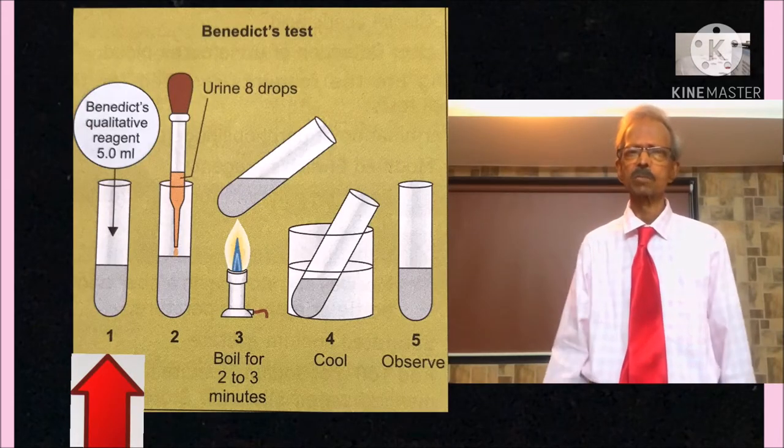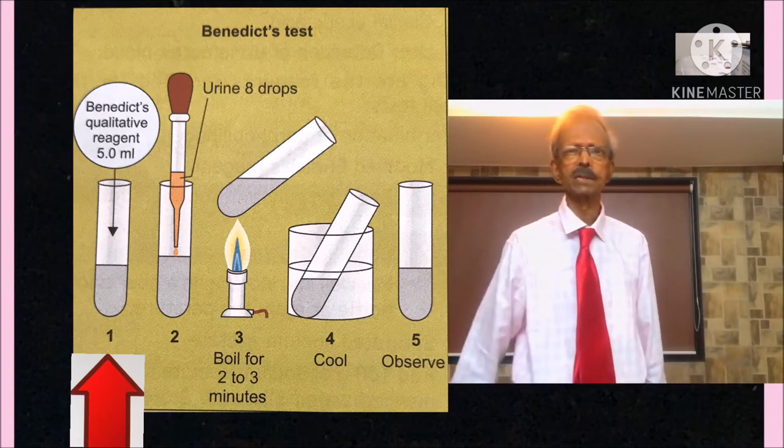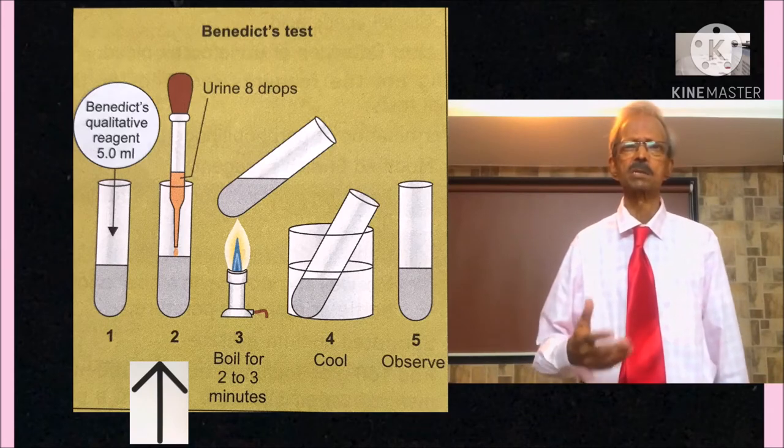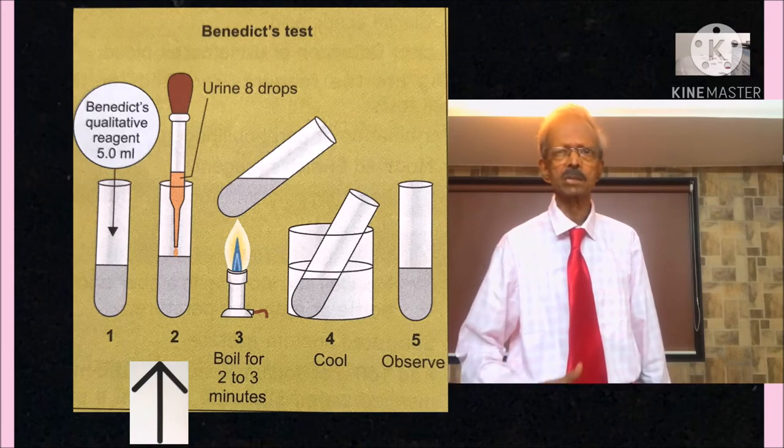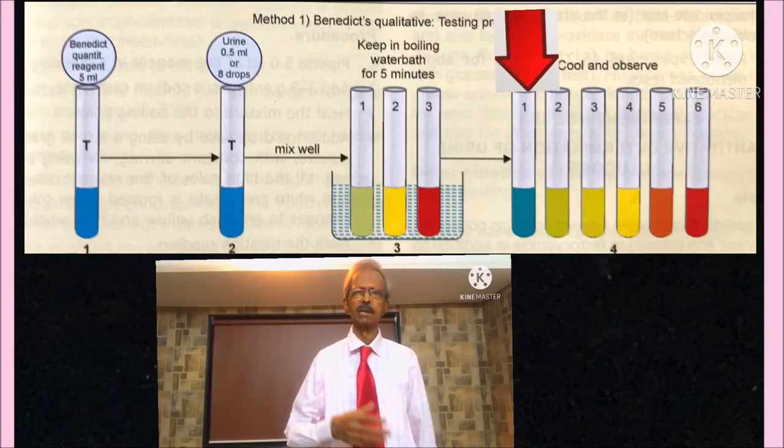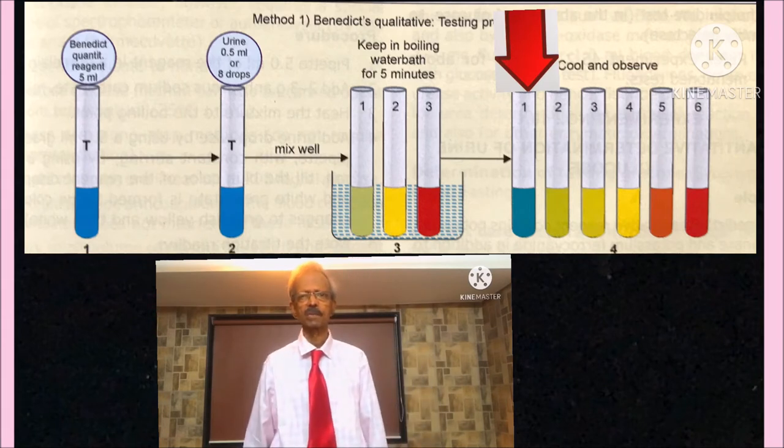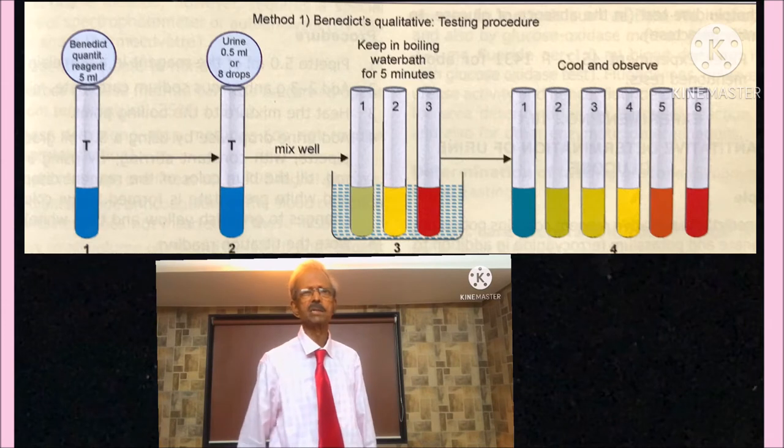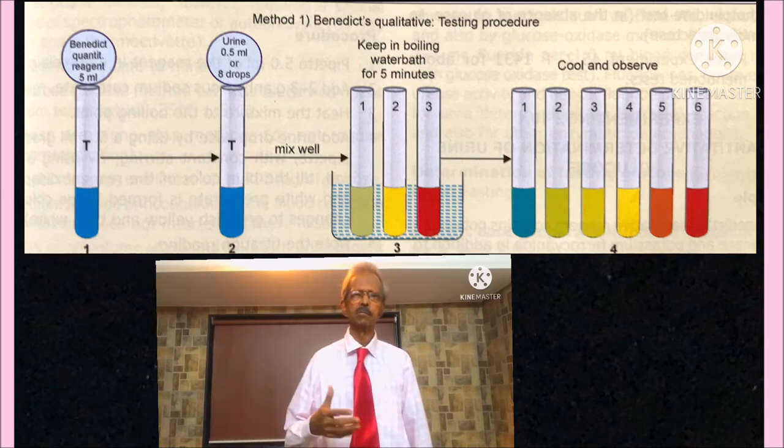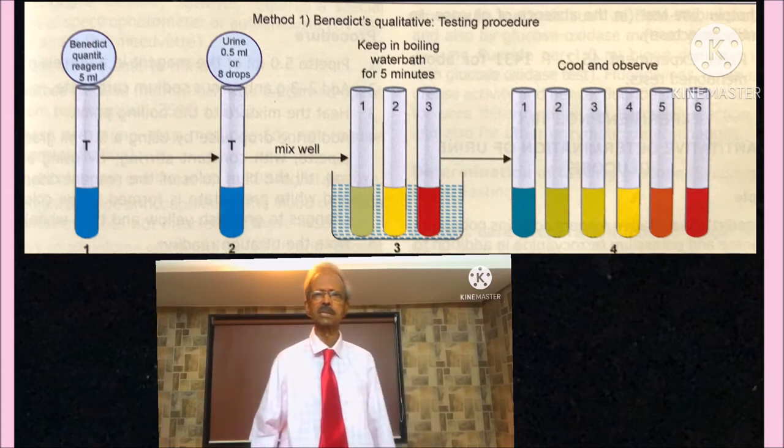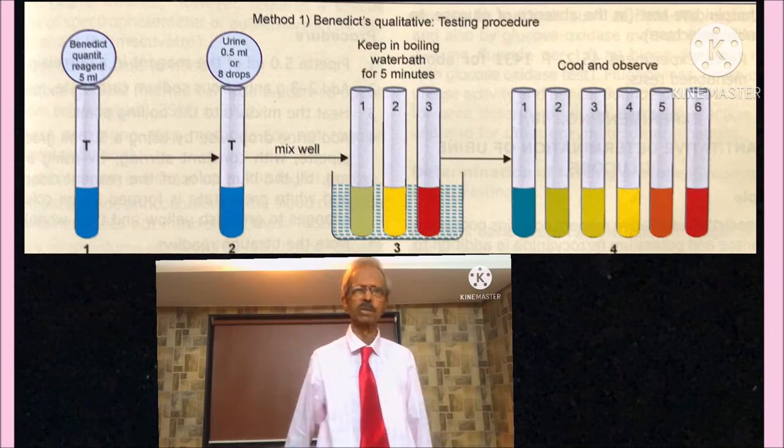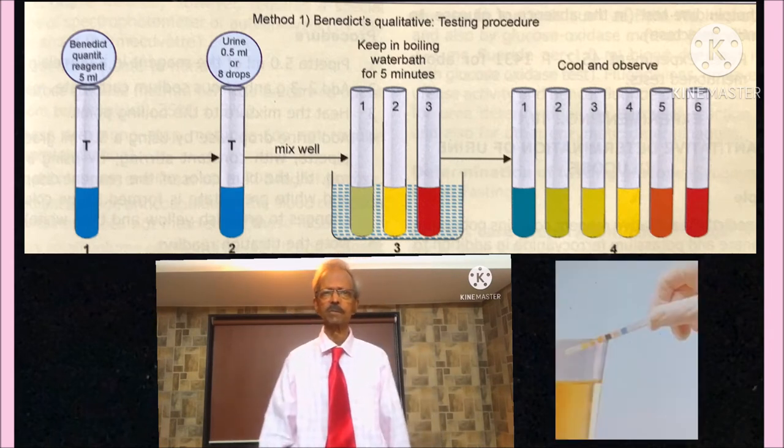Benedict test is performed like this. First take 5 ml of Benedict reagent in a bigger size test tube. Then add urine 8 drops or 0.5 ml. Mix well and boil for 2-3 minutes. Cool and observe color. If there is no change in blue color, that means sugar is absent. If color changes, that will indicate presence of sugar. And the principle is, any reducing substance will reduce cupric oxide present in Benedict reagent to cuprous oxide. But there is no guarantee that it will indicate only glucose. Hence, to confirm presence of glucose, it is necessary to use a urine strip.